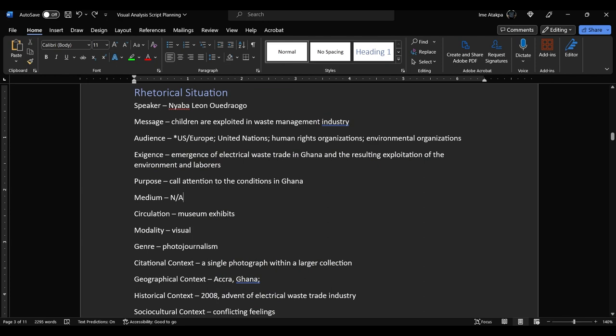Okay, so I already have all this laid out. So I'm not going to spend that much time on it. But I do want to point one small thing out. The message, "children are exploited in waste management industry," that I had to research. Exigence, emergence of electrical waste trade in Ghana, and exploitation, had to look that up. Circulation museum exhibits, had to Google that one. Modality visual is obvious. Genre photojournalism, I just decided that on myself because that's what it seems like it is.